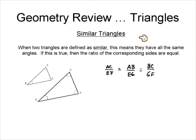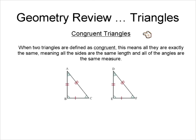We don't want to confuse similar triangles with congruent triangles. If two triangles are congruent, this means not only are their angles the same, but their side lengths are also the same. In this diagram, we can tell the sides are the same because they have matching tick marks — two lines and two lines means those sides are the same length.